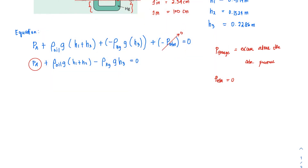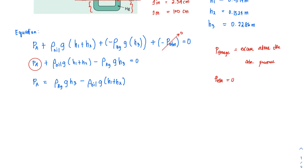We want to isolate p_A. Rearranging: p_A = ρ_mercury × g × h3 − ρ_oil × g × (h1 + h2). We have successfully isolated p_A on one side of the equation, which is a good direction toward the solution.